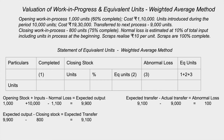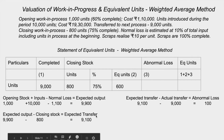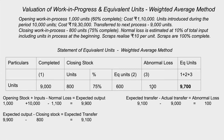Weighted average method uses the same problem but does not distinguish opening and current process inputs. Completed units transferred is directly taken as 9,000. Work in progress is 800 units at 75%, giving 600 equivalent units. Abnormal loss is calculated separately. Normal loss is 1,100. So under weighted average, total equivalent units = 9,000 + 600 + 100 = 9,700 units.